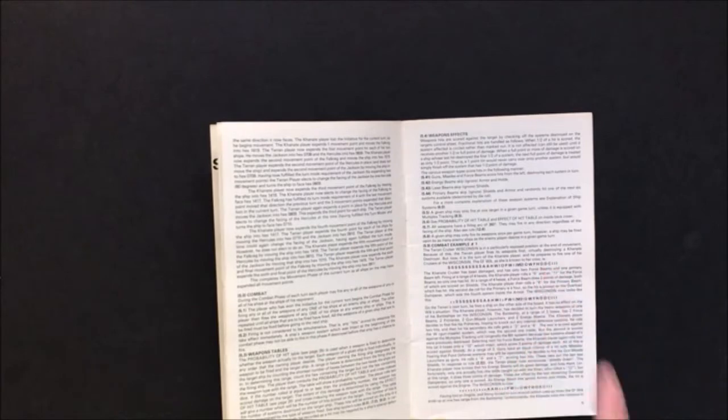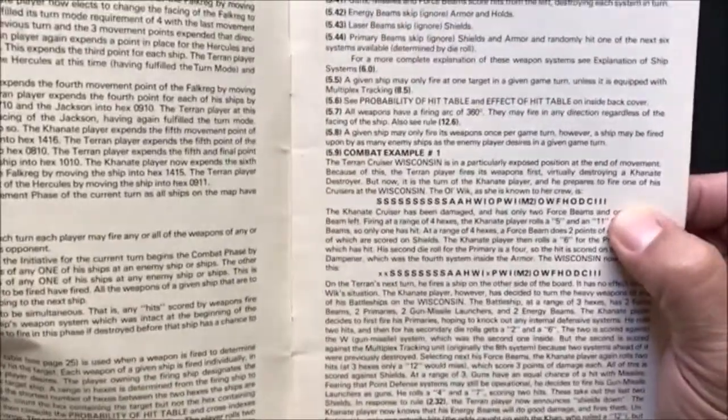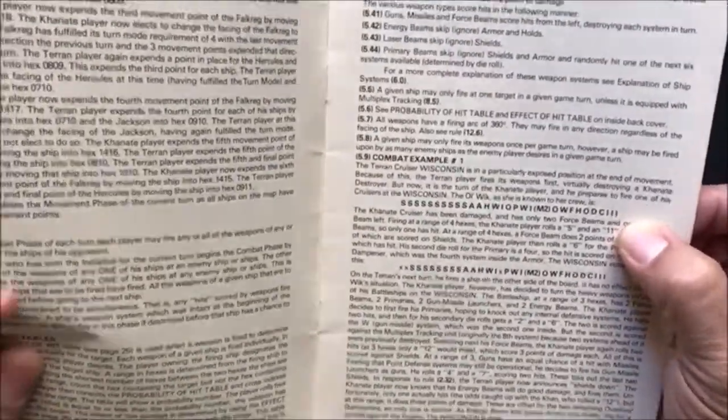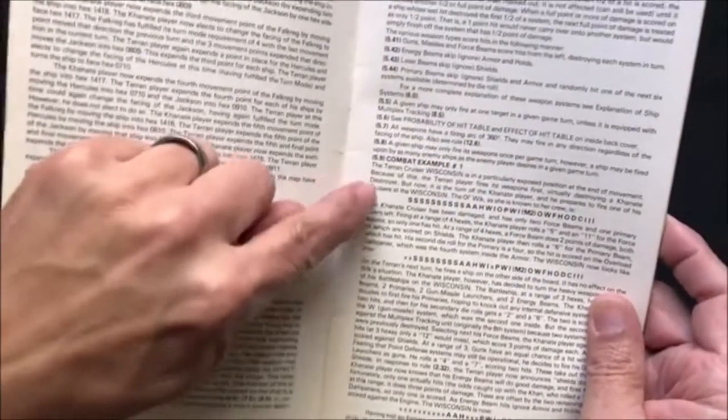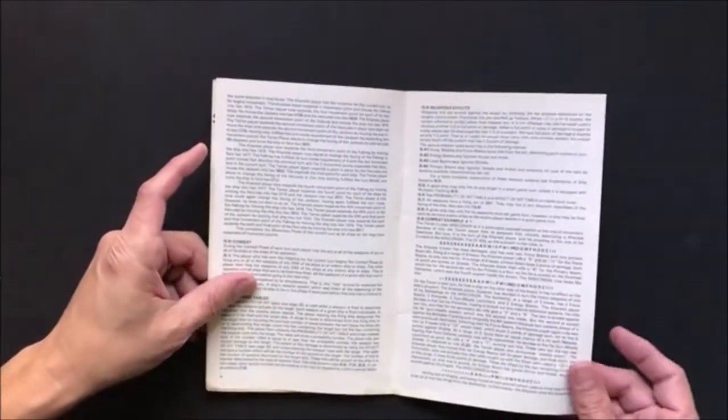You can see kind of the ship system display here. It's kind of far down but this is the ship system display: impulse engines, shields, armor. When you're taking damage you're coming in from the shields armor side.